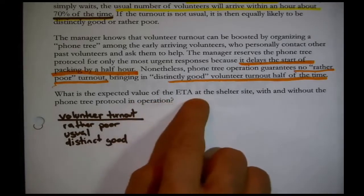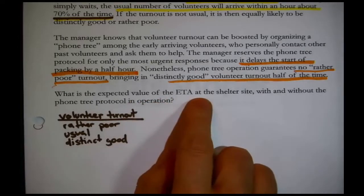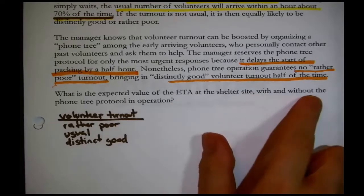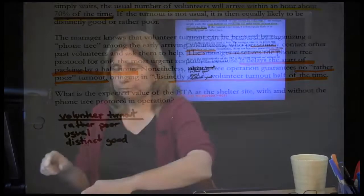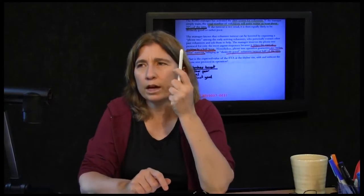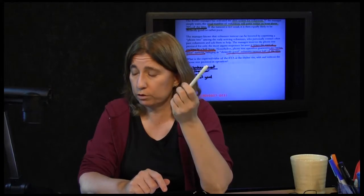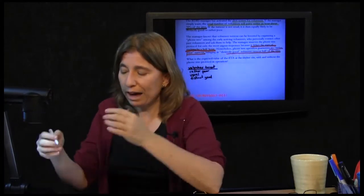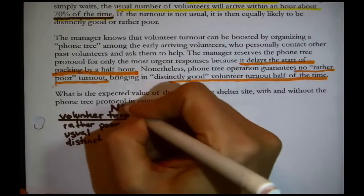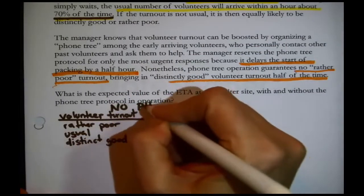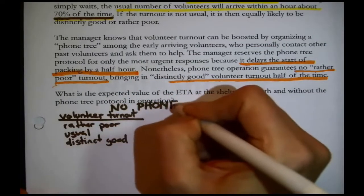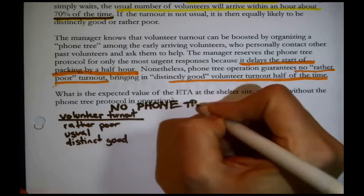What is the expected value of the estimated time of arrival at the shelter site with and without the phone tree? We have to recall some facts from the scenario before. First, there were these three future states of nature, and in the previous scenario there wasn't any phone tree — so that would be the option of no phone tree.